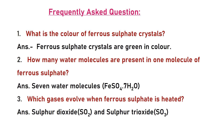Frequently asked questions: First — what is the color of ferrous sulphate crystals? Green in color. Second — how many water molecules are present in one molecule of ferrous sulphate? Seven water molecules. Third — which gases evolve when ferrous sulphate is heated? Sulfur dioxide and sulfur trioxide.